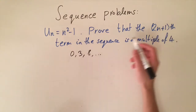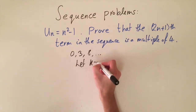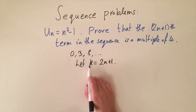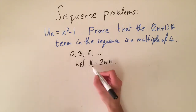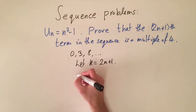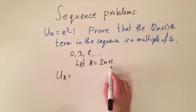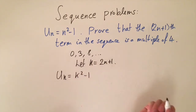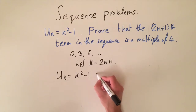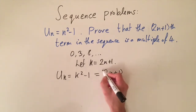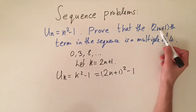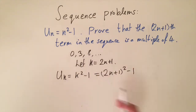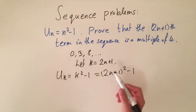To do this, we let k = 2n+1, which simplifies the notation and represents our odd number. To prove that this term is a multiple of four, we substitute into the formula. We want to show that u(k) = u(2n+1) is a multiple of four. By the formula, u(k) = k² - 1, and since k = 2n+1, we get u(k) = (2n+1)² - 1. Using k avoids confusion between the n in the term index and the n in the formula.